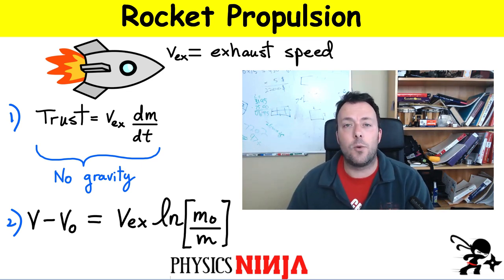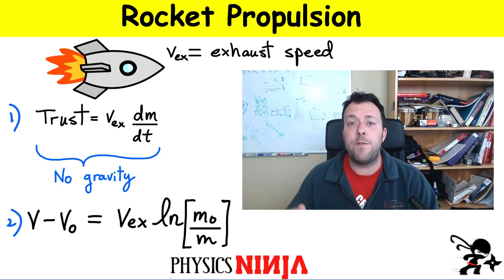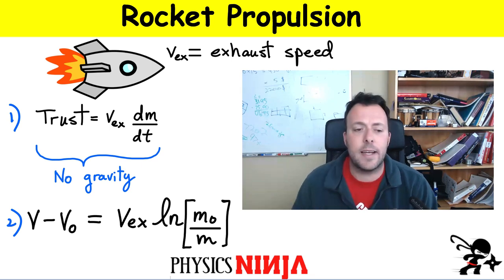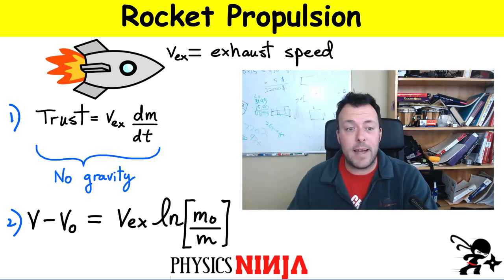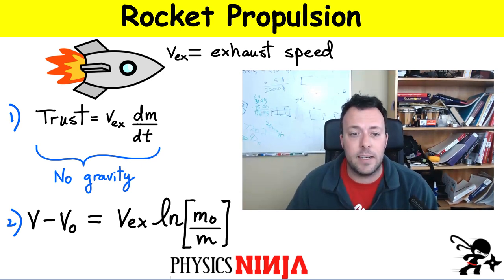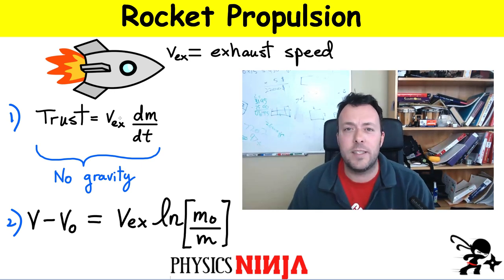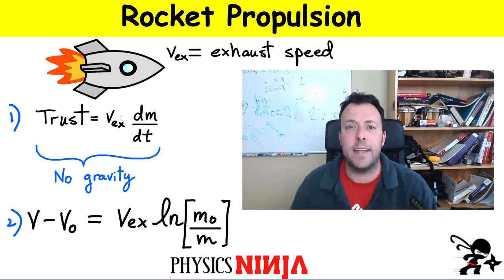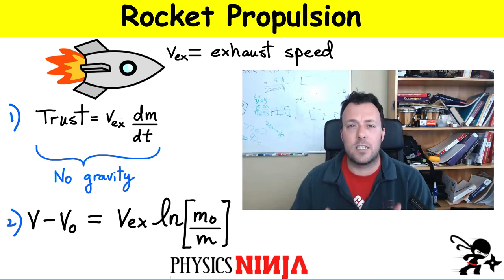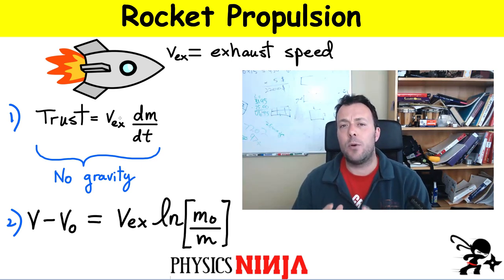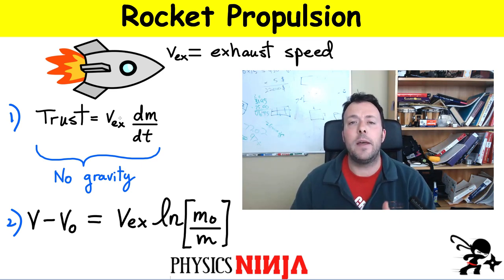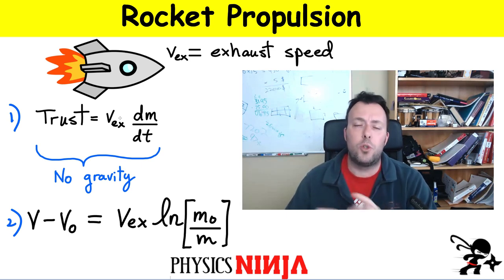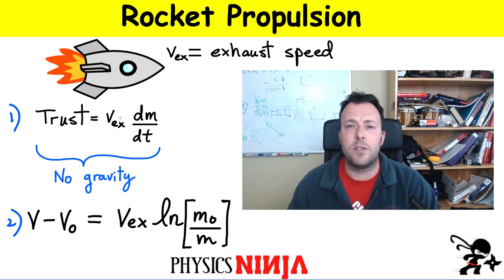Once you know the force acting on the rocket, you might be interested to know how fast the rocket is going to move if there's a thrust force acting on it. That's the second equation we're going to look at here. It depends on the rate of change of the mass — you can see the thrust force depends on dm/dt. It also depends on how fast it's ejecting stuff from the back of the rocket. That's called the exhaust speed. So let's look at both of these equations and the derivation using conservation of linear momentum, and then apply both to two simple problems.